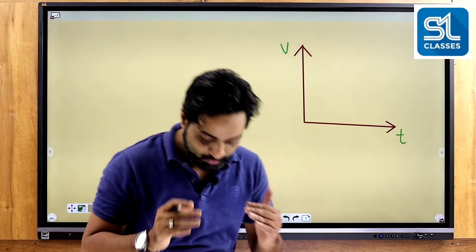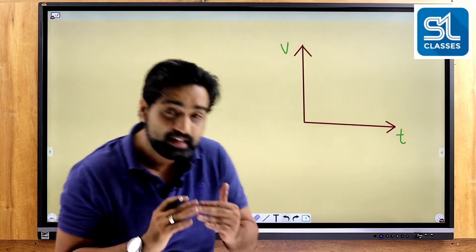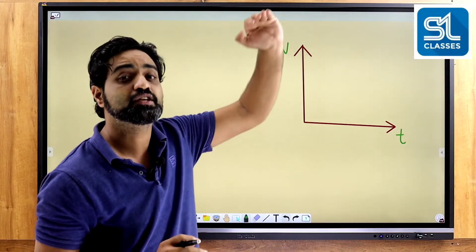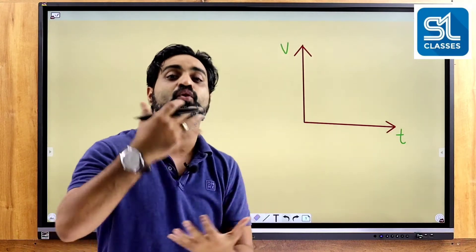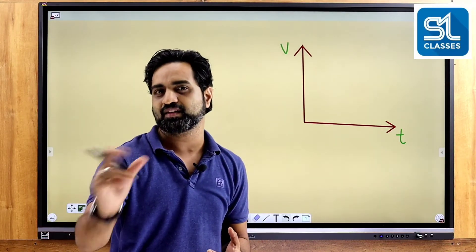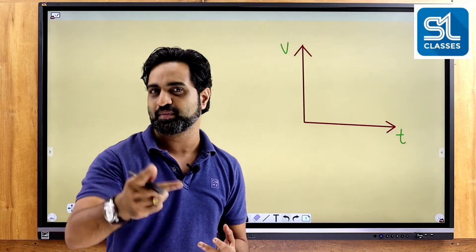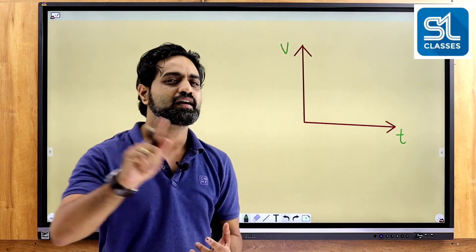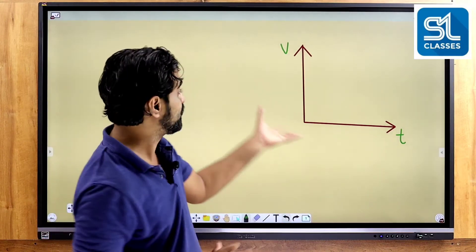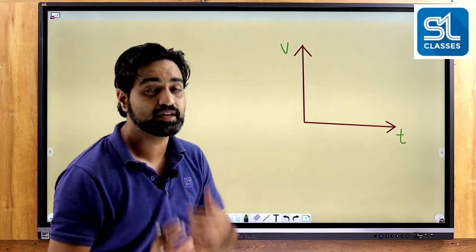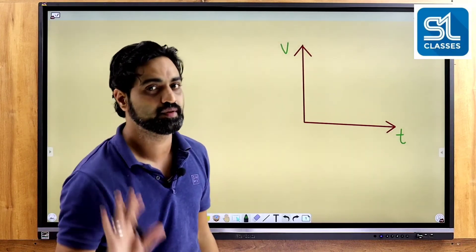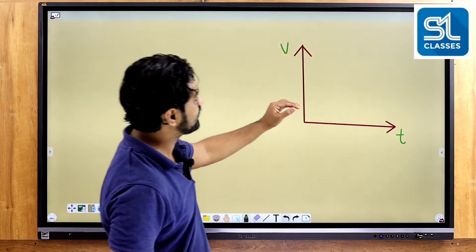This is a velocity-time graph showing uniform acceleration. The velocity is increasing. The values are 2 meters per second, 4, and 6. I am going to write this down. We will learn the acceleration from the graph. I will draw this graph now.